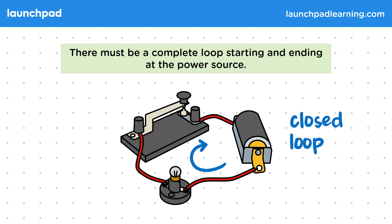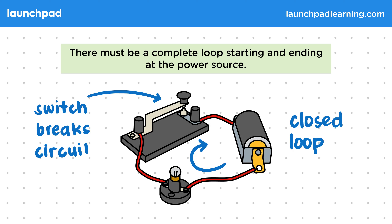If there is no loop, then the current stops completely. This is how the switch works. By breaking the circuit, the switch removes the closed loop and so a current cannot flow.